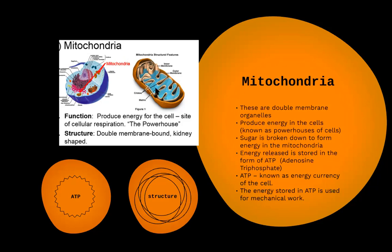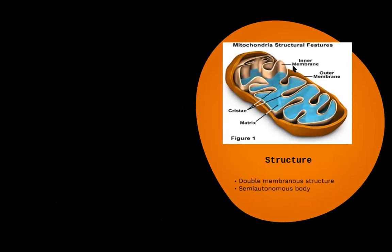Now let us look at the structure. The outer membrane is very porous, and the inner membrane has many infoldings. If you stretched this inner membrane out completely, you'd see it is actually larger than it appears, because of the infolding. This means it has a much greater surface area than it would have as a straight structure — and this increased surface area is important because this is the place where ATP generation takes place.